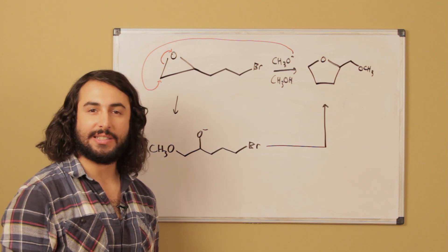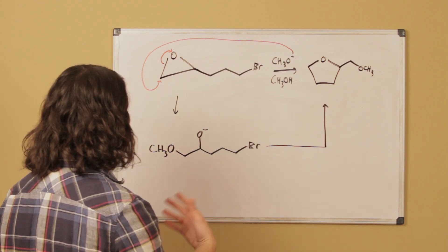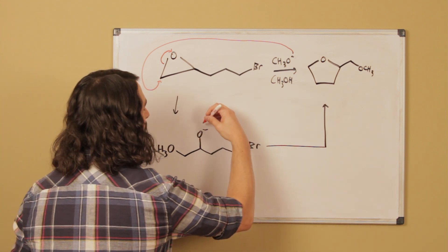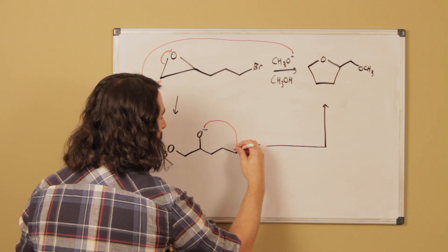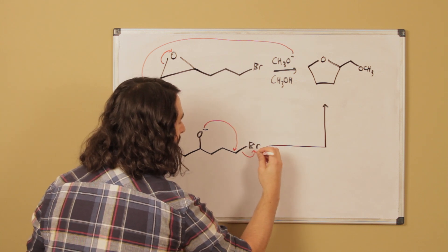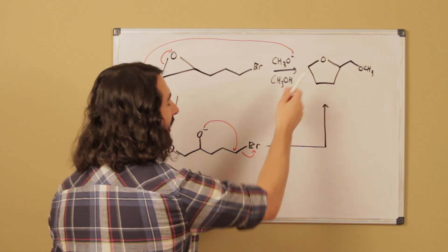And now the second step here is kind of like the second step of a Williamson ether synthesis except that it's intramolecular, because this oxyanion can do an SN2 right here and kick off this bromide and that'll lead us to the product.